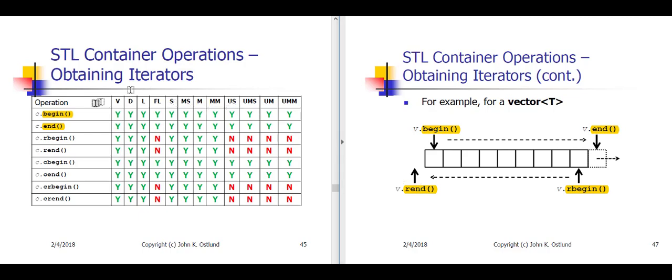As you can see on slide 45, all container types support forward iterators from begin up through but not including end. For the unordered containers, reverse iteration doesn't really make sense. An iterator from begin to end will go through each value in the unsorted container, but the order is not defined or predictable. So the idea of going through this unpredictable sequence in reverse is nonsense, and consequently reverse iterators are not provided for unordered containers.